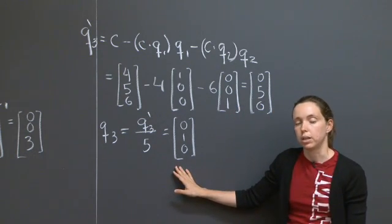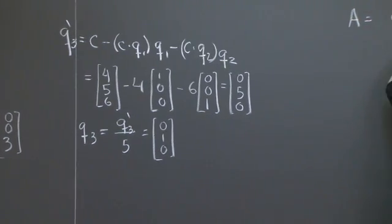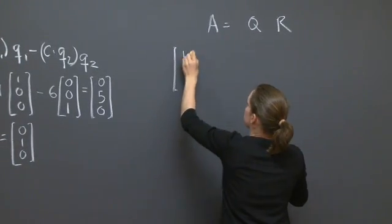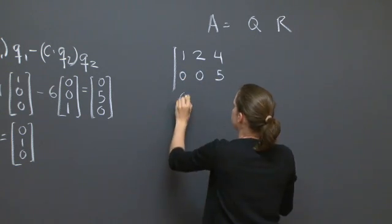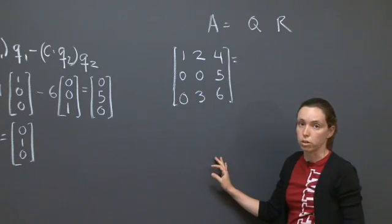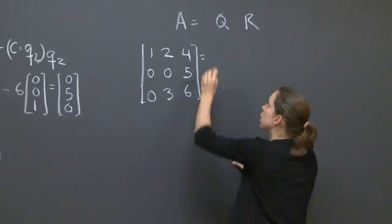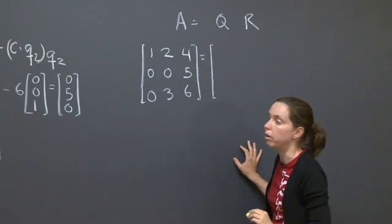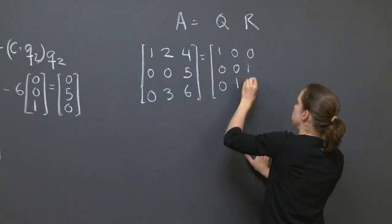Next part of the problem is we want to write the QR decomposition of the matrix A. A equals QR. Well, the matrix A, you already know what it is. It is the matrix 1, 2, 4, 0, 0, 5, 0, 3, 6. In Q, you want to be an orthogonal matrix. Like I said before, an orthogonal matrix has orthonormal vectors for its columns. And we already have such a matrix. It's the matrix that has Q1, Q2, and Q3 as its column vectors. 1, 0, 0, 0, 0, 1, and 0, 1, 0.